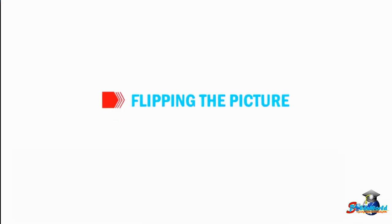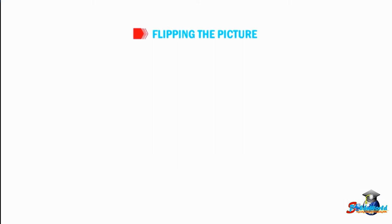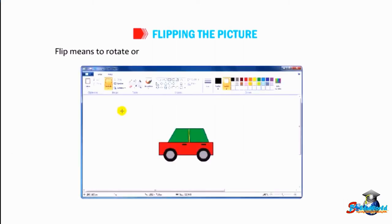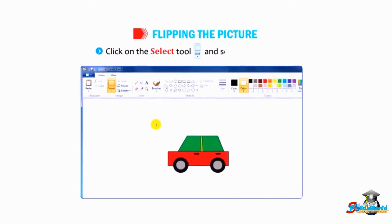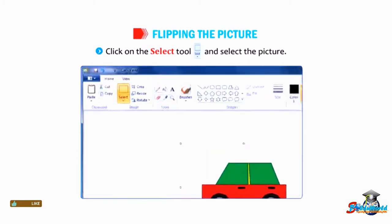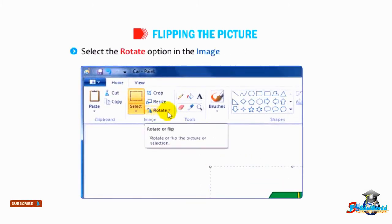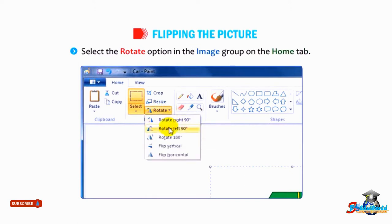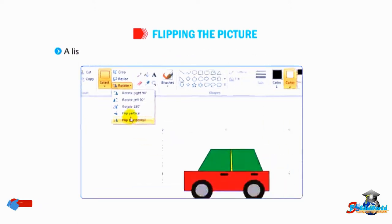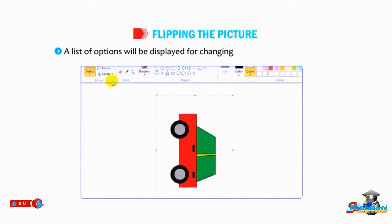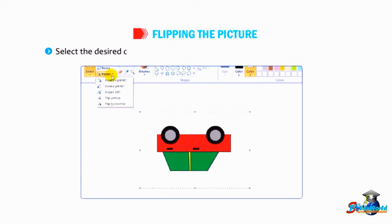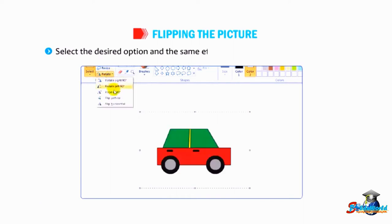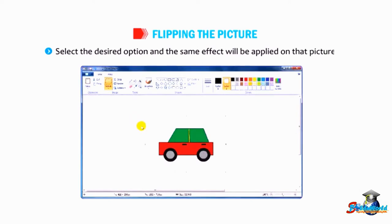Let us understand how to flip the picture. Flip means to rotate or turn the selected picture horizontally or vertically. Click on the select tool and select the picture. Select the rotate option in the image group on the home tab. A list of options will be displayed for changing the rotation or flipping. Select the desired option and the same effect will be applied on that picture.